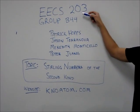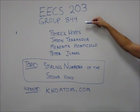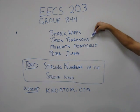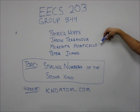Hi, we're EECS 203, Group B44. Our members consist of Patrick Hopps, Jason Terranova, Meredith Monticello, and Peter Jung.